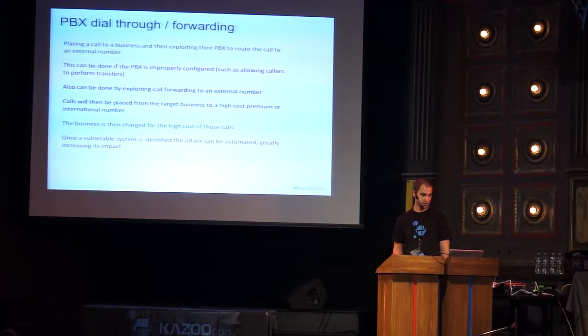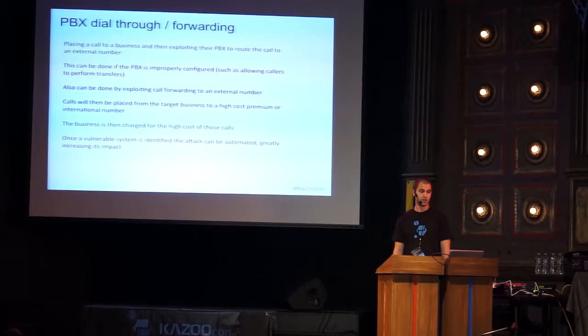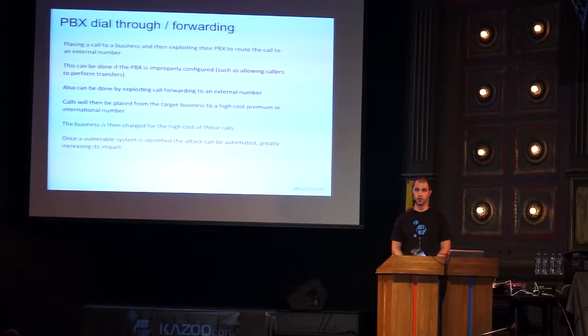PBX dial-through or forwarding is a potentially very expensive way of attacking a system — it's placing a call to a business and then attempting to exploit the PBX to reroute that call to an external or premium number. This can be done if the PBX is improperly configured, such as allowing callers to perform transfers or through voicemail. The business is charged for the cost of these calls, and once a vulnerable system is identified, the attack can be automated, greatly amplifying the costs.